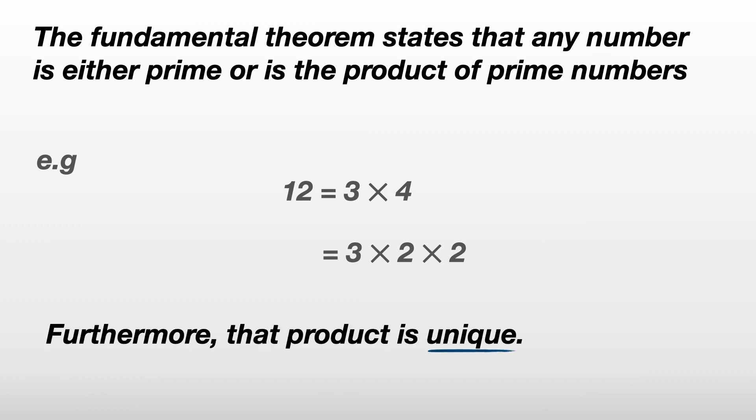Furthermore, that product is unique, meaning that there aren't another set of prime numbers you can multiply together to get 12, only 3, 2, and 2.